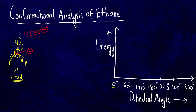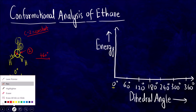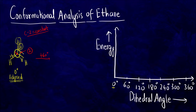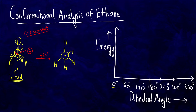We keep C2 constant and rotate only the front carbon C1. First, let us rotate by plus 60 degrees. The back carbon remains as it is — hydrogen, hydrogen, hydrogen — and the front carbon, rotated by 60 degrees, gives us a staggered conformation.